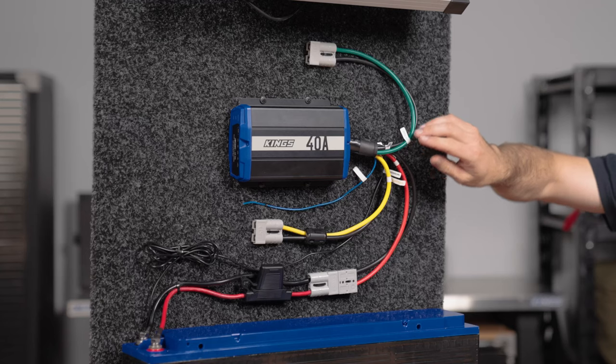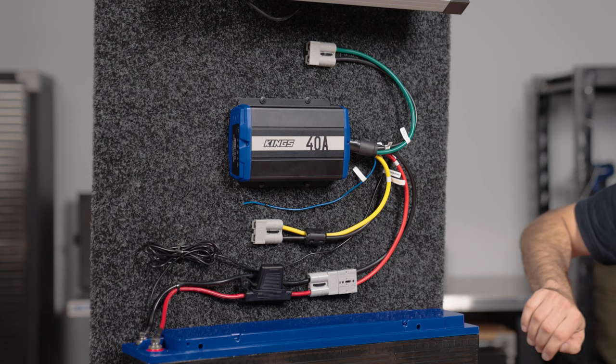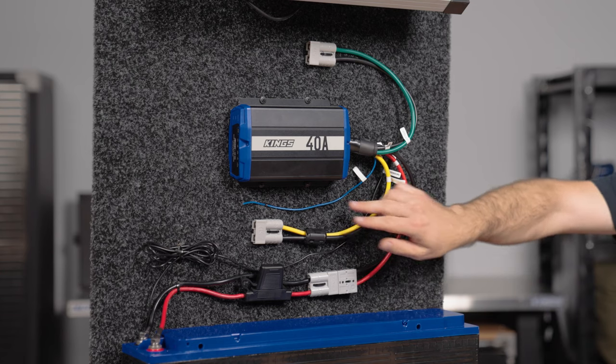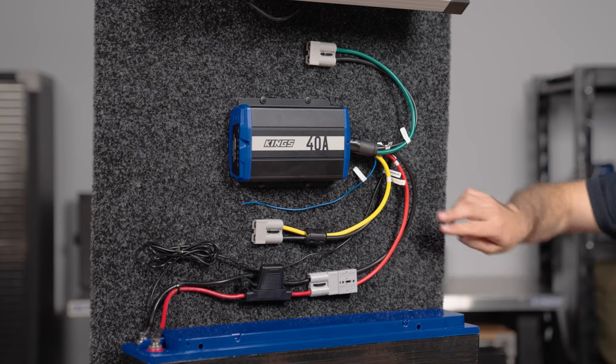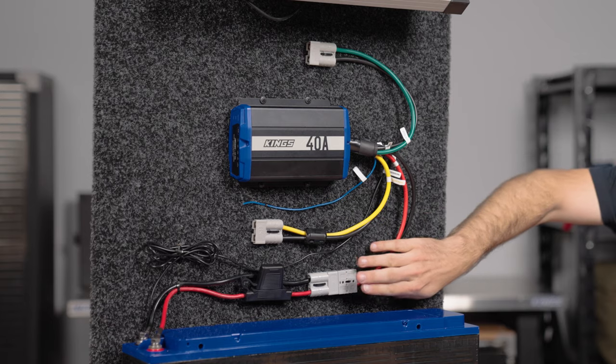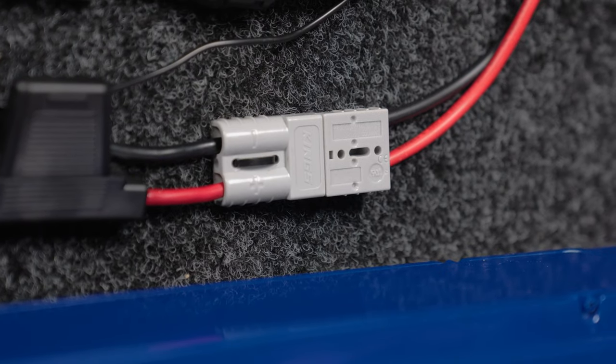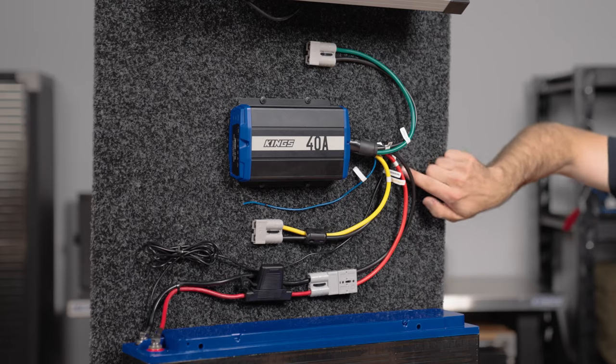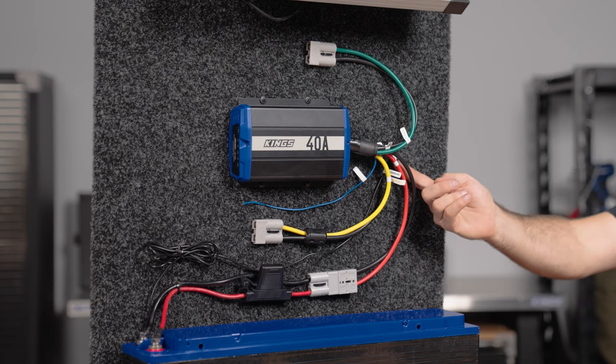Coming out of the unit, we have three heavy-duty pairs of wires, a single black wire and a single blue wire. Starting with the red and black pair that goes to this first quick-connect plug, that is your battery output, and you'll also notice that each of these wires is labelled.